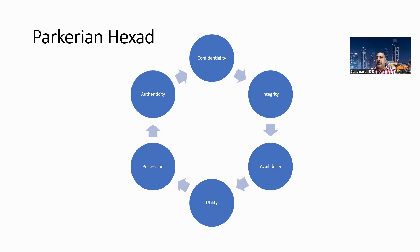Coming to utility: utility, authenticity, and possession are the three terms added to the Parkerian Hexad. Utility is the usefulness of the data. For example, a ransomware attack will render data not usable by anybody. If the hacker encrypts the data and doesn't share the key unless you pay the ransom, the utility of the data is still with you but you're not able to use it. That's what utility is.